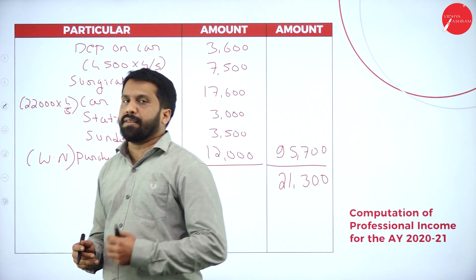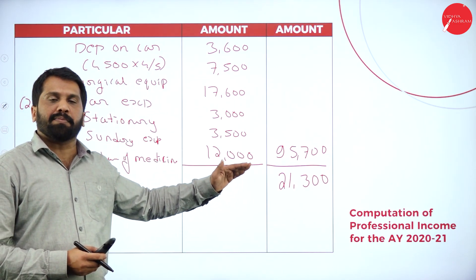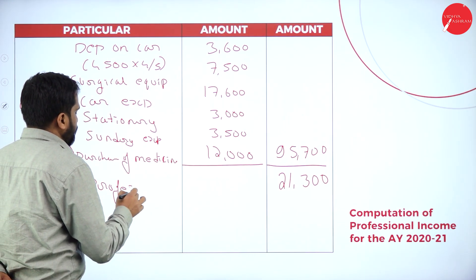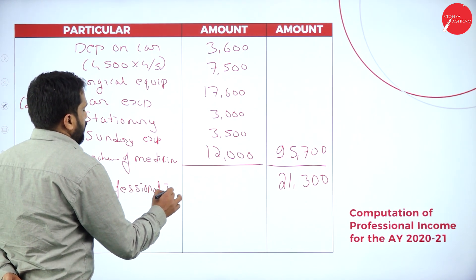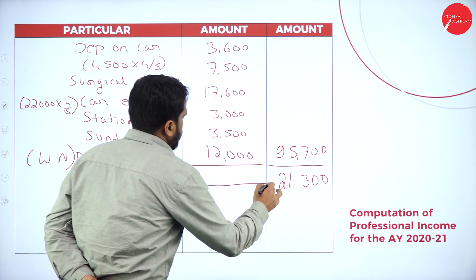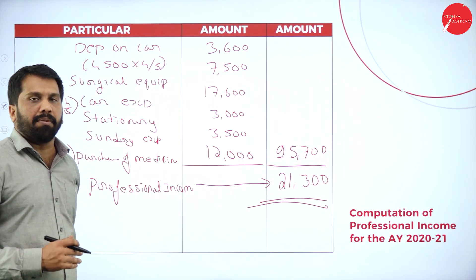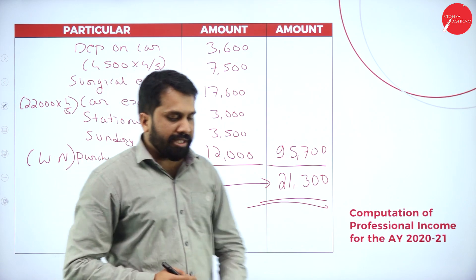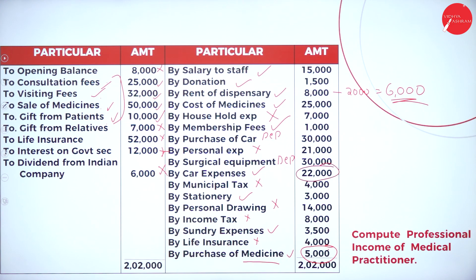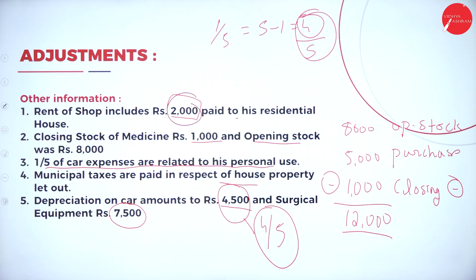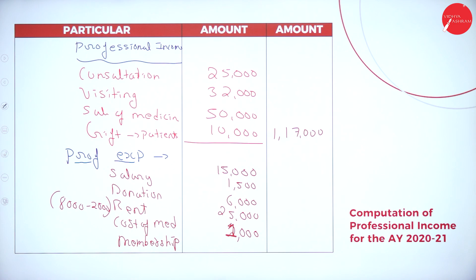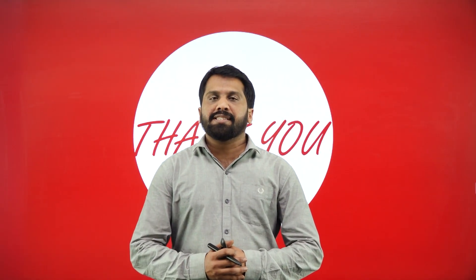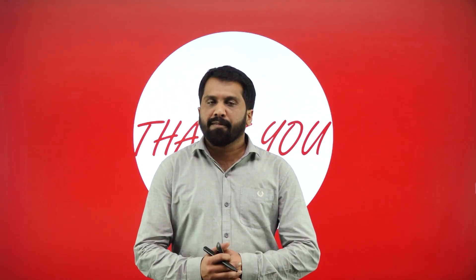Professional income is 21,300. Income minus expenditure is called your professional income. This is all about the medical practitioner profession problem. I'll go back to all the slides so you can take a screenshot. Please work out this problem without fail. Thank you.